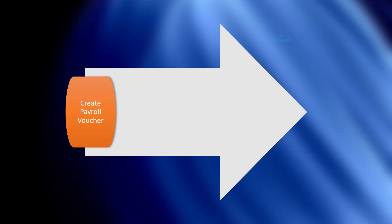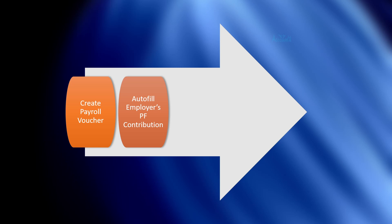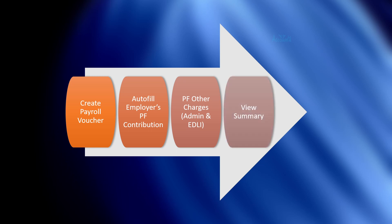In this video, we are going to see how to create these transactions entirely. Once we create these vouchers, we are going to view the summary and see how to generate ECR. This is a five-step process. First, create the payroll voucher. Second, auto-fill employer's PF contribution. Third, PF other charges — accounting PF admin charges and EDLI contribution. Then, fourth, view the summary of these transactions. And finally, fifth, generate the ECR.